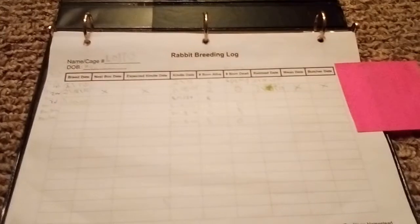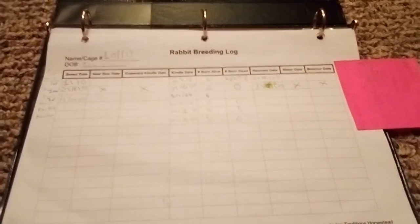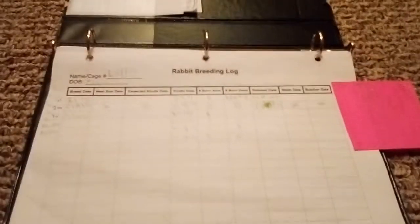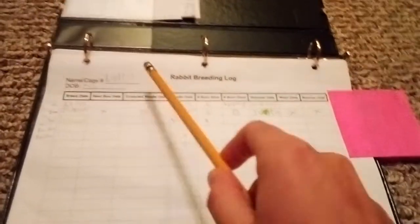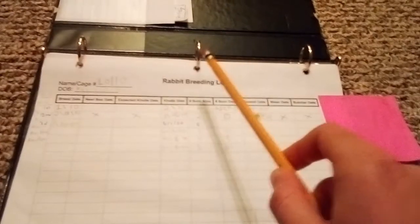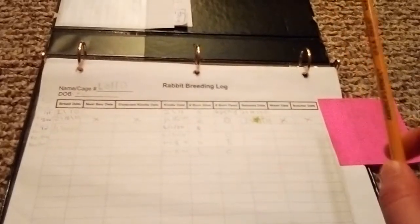If I were designing my own rabbit breeding log, I would put the buck, then a breeding date, kindle date, born total, died, and then that'd be all.